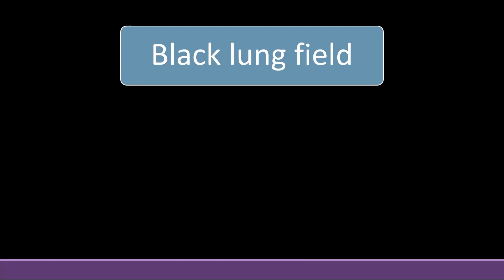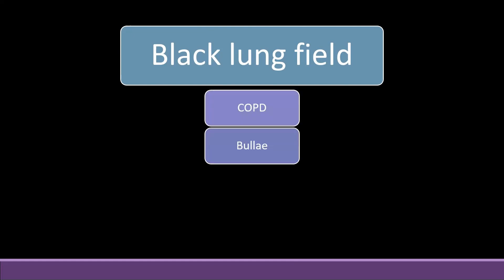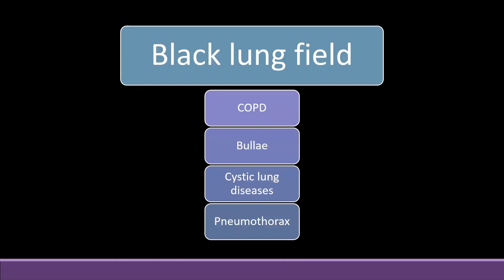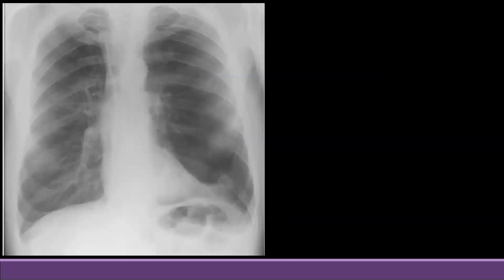Black lung: the lungs appear more black compared to normal because of excess air. Normally there is air in the lungs, but when air becomes more than normal, the lungs appear blacker. The most common causes of black lungs are COPD, bulla, cystic lung diseases, and pneumothorax. We will look at how to differentiate between these.